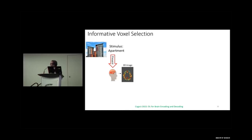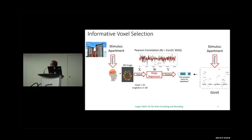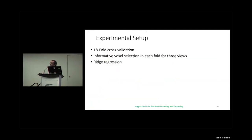For every individual voxel, together with its 26 neighboring voxels (total 27 voxels), a ridge regression model was trained to predict the stimulus representation. This was repeated for all 200,000 voxels. Pearson correlation was computed for every voxel across feature dimensions. The top 5,000 voxels by correlation were selected as informative voxels for model building.